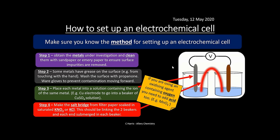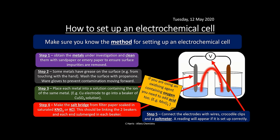The fourth step is making the salt bridge from filter paper. You take round filter paper, fold it into a strip, and soak it in a saturated solution — normally potassium nitrate, though potassium chloride also works. Straddle it across the two beakers so it sits in the solution but does not touch the electrodes. Then connect the electrodes with wires, crocodile clips, and a voltmeter.